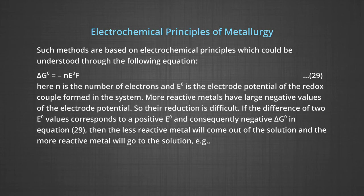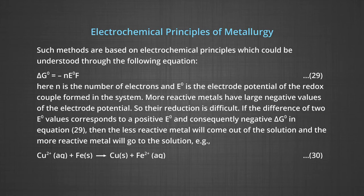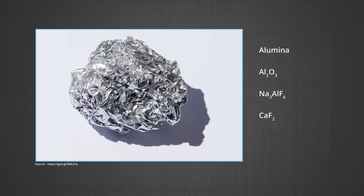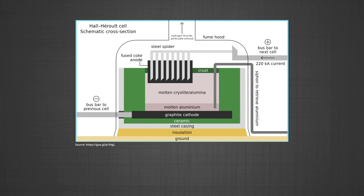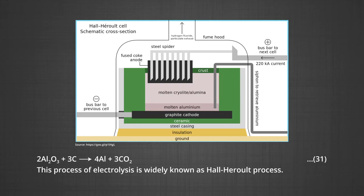If the difference of two E° values corresponds to a positive E° and consequently a negative ΔG° in the equation, then the less reactive metal will come out of the solution and the more reactive metal will go into the solution. For example, copper ions react with iron to form copper and iron ions. In the metallurgy of aluminum, purified alumina is mixed with Na₃AlF₆ or CaF₂, which lowers the melting point of the mix and brings conductivity. The fused mixture is electrolyzed using a steel cathode and graphite anode. The overall reaction may be taken as: Al₂O₃ + C → Al + CO₂.